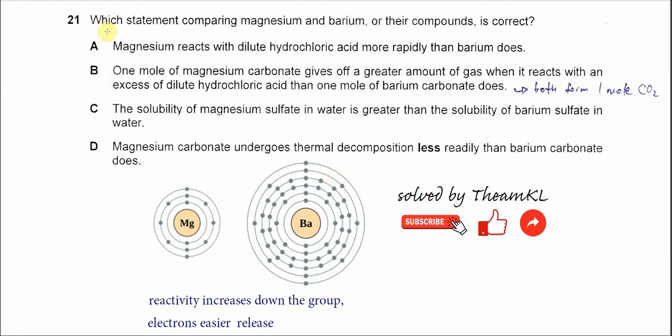Question 21. Which statement comparing magnesium and barium or their compounds is correct? A. Magnesium reacts with dilute HCl more rapidly than barium does.